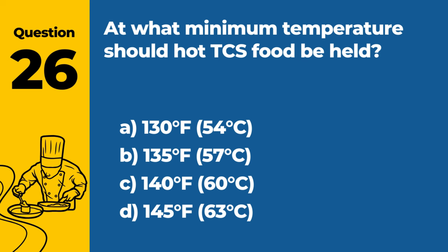Question 29: What is the primary cause of botulism in food service? A. Improper cooking temperatures. B. Cross-contamination between raw and cooked foods. C. Inadequate cooling and reheating of food. D. Improperly canned or vacuum-packed foods. Answer: D. Improperly canned or vacuum-packed foods. The primary cause of botulism in food service is improperly canned or vacuum-packed foods, which create anaerobic conditions conducive to the growth of Clostridium botulinum.